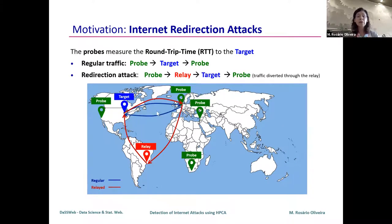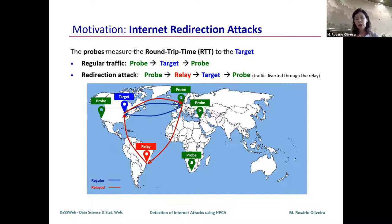If there is an attack, the traffic may be forced to go through a third machine, called a relay, which illicitly accesses our traffic and information. If an attack occurs, the round trip time will suffer an increase, and this is what we are looking for.